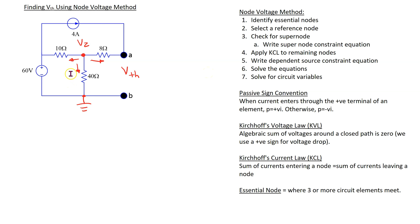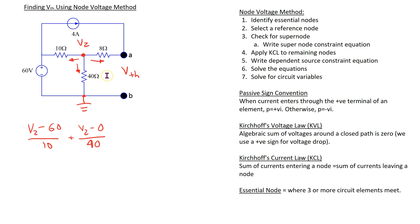The branch current through the 10 ohm resistor is (Vz minus 60) over 10. The branch current through the 40 ohm resistor is Vz over 40. The 8 ohm resistor is in series with the current source, so it must carry the same current. Our assumed branch current direction is opposite to the current source direction, giving minus 4 equals 0. Solving this single equation gives Vz equals 80 volts.